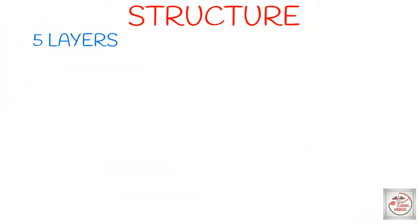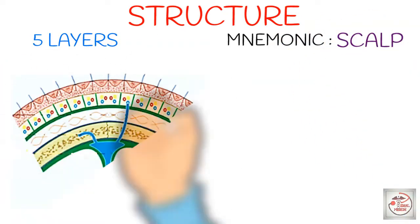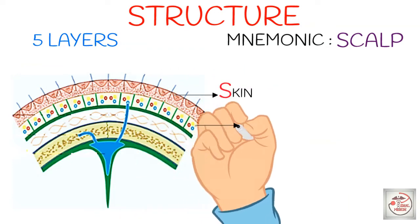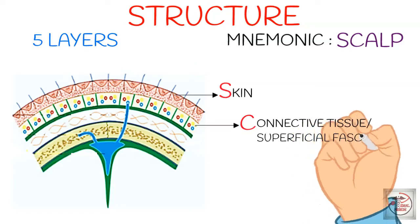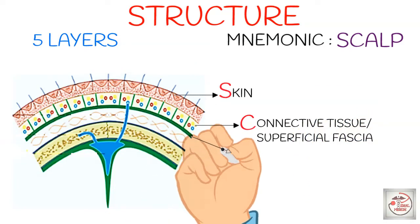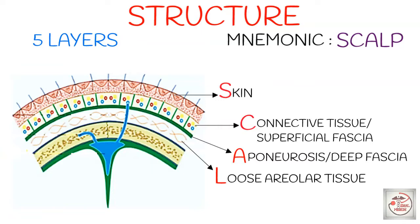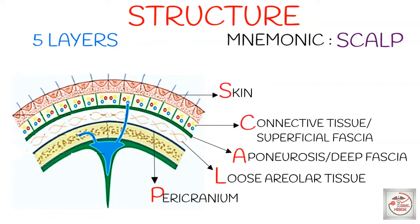Let's see the structure of scalp. Scalp paanch layers se form hoti hai, aur inhe yaad rakhne ka mnemonic khud scalp hi hai. First layer is Skin (S), second is Connective tissue (C), also called superficial fascia. Third layer is Aponeurosis (A), also known as deep fascia. Fourth layer is Loose areolar tissue (L). And the fifth and last layer is Pericranium (P). That's how we remember these layers in sequence using the name SCALP itself.